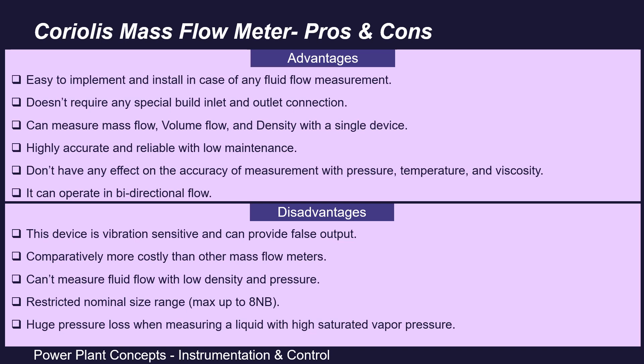Coming to its advantages and disadvantages: advantages of using a Coriolis mass flow meter include that it is easier to implement and install for any fluids, it does not require any special inlet and outlet connections, and it can measure mass flow, volume flow, and density with a single device. It is highly accurate and reliable with low maintenance, and has no effect on measurement accuracy from pressure, temperature, or viscosity changes. It can also operate in bi-directional flow and has a self-draining facility.